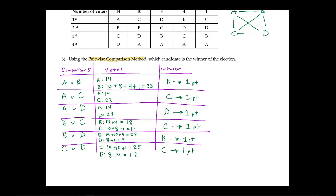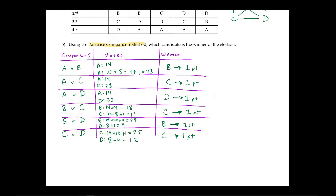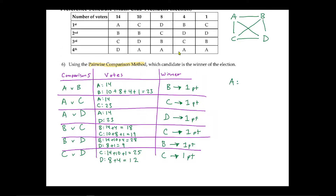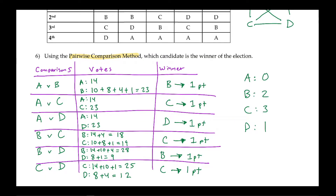Now let's see how many points each candidate got overall. Anna didn't beat anybody, so A gets 0 points. Bob won two head-to-head matchups, so B gets 2 points. Cora won three matchups, so C gets 3 points. Dan won just one head-to-head matchup, so Dan gets 1 point. In the pairwise comparison method, Cora is the winner.